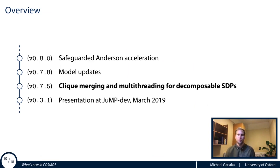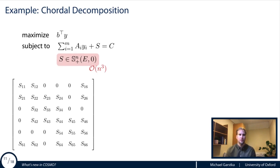Next I want to talk about clique merging and multi-threading for decomposable SDPs, which allows solving extremely large SDPs. In an SDP, the decision variables are vector Y and matrix S. The problematic constraint is that S must be positive semidefinite — if N is 10,000 then projecting this takes N cubed operations. However, by examining the sparsity pattern of all the A_i matrices and C, we can determine where the zeros are in S, and represent this sparsity structure as a graph with edges between nodes that have non-zero entries.